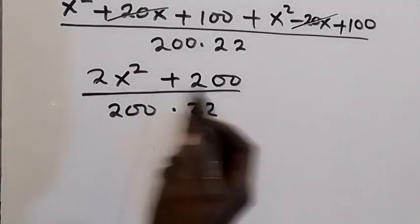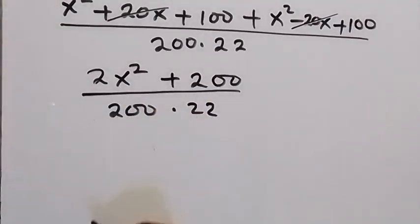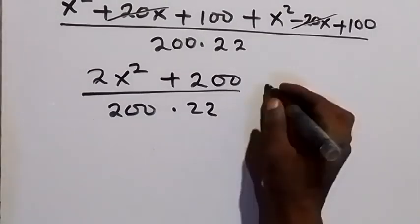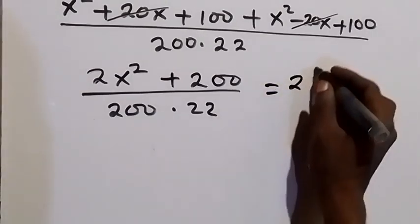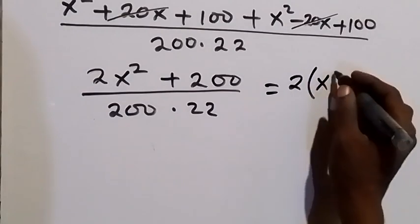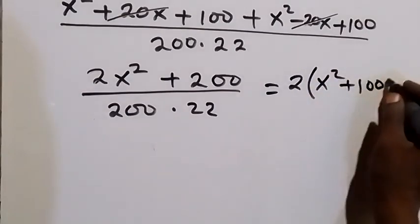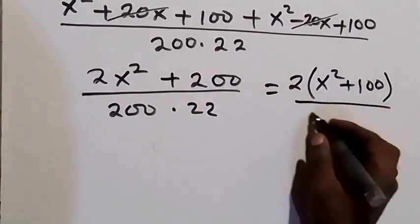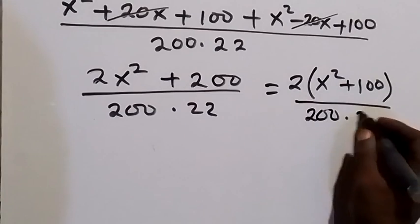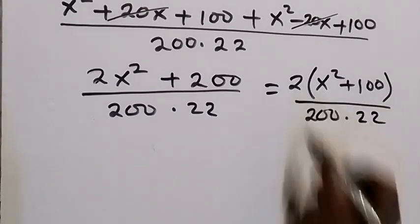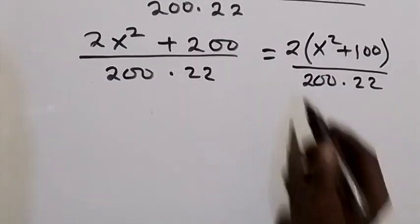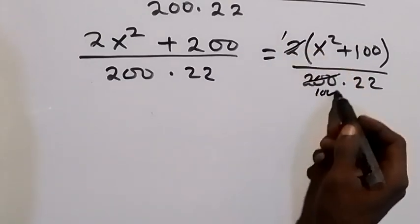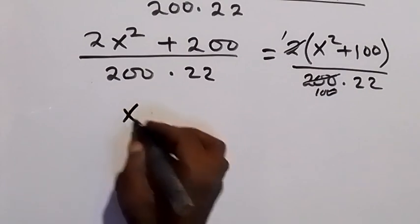From here we factor 2 out from the numerator. This can be written as 2 times (x² + 100), divided by 200 times 22. Factoring out the 2, the 2 in the numerator and part of 200 in the denominator simplify, leaving x² + 100 over 100 times 22.